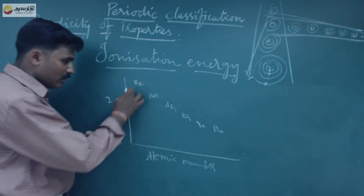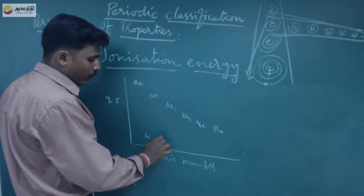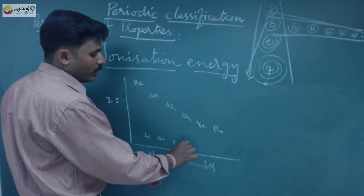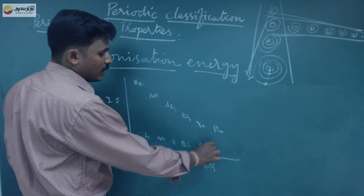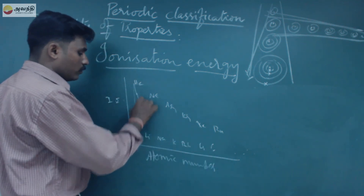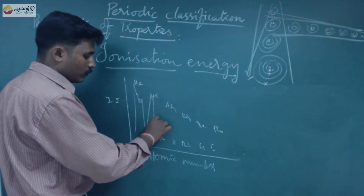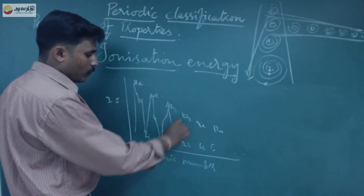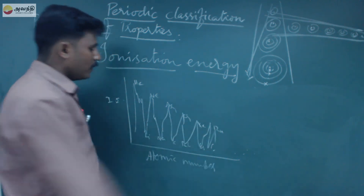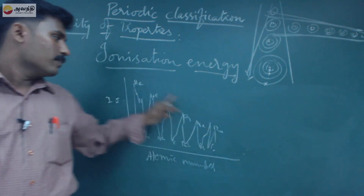Looking at lithium, sodium, potassium, rubidium, caesium, francium — these alkali metals show the lowest ionization energy on the graph. The highest ionization energy is with helium, and the lowest is with lithium, showing the overall trend.